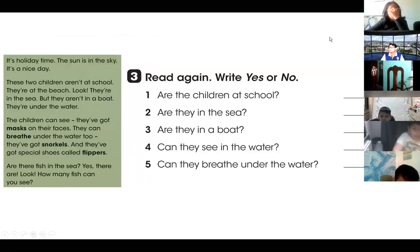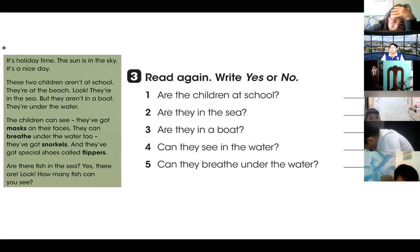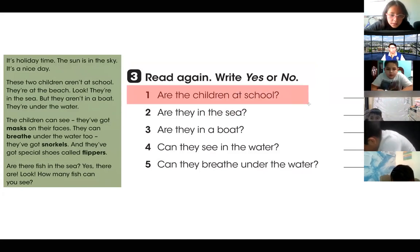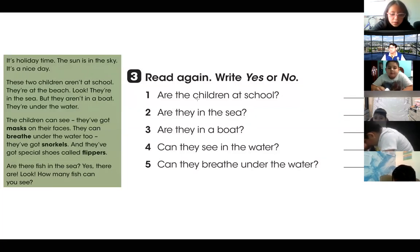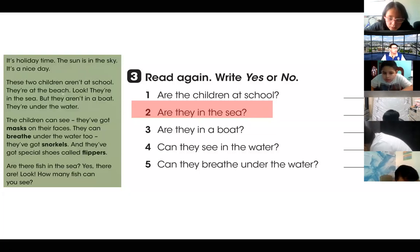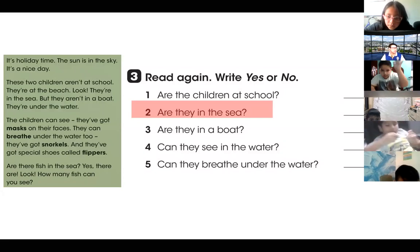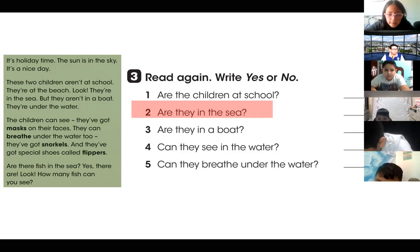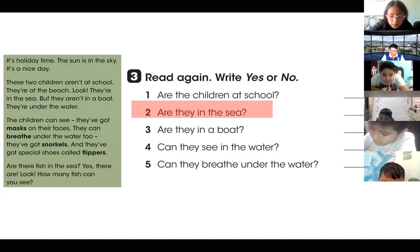Now, look at the other part. It says you have to read this and write yes or no. For example, are the children at the school? The answer is no. Are they in the sea? What is the answer — yes or no? I'm going to activate Eitan's microphone. Hello, Eitan. Are they in the sea? Yes or no? Yes. Yes, very good, Eitan. The children are in the sea — en el océano, en el mar. Thank you very much. That's correct.